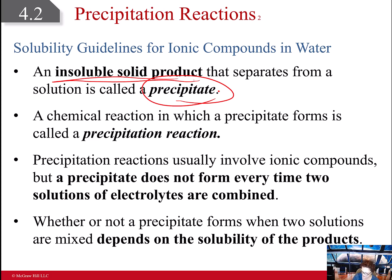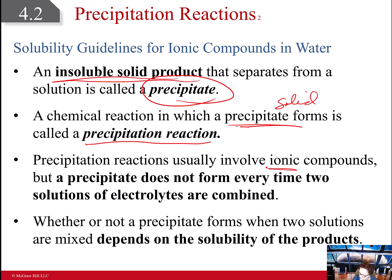The chemical reaction in which a precipitate solid forms is called a precipitation reaction. They usually involve ionic compounds, but a precipitate does not form every time two solutions of electrolytes are combined. Whether or not a precipitate forms depends on the solubility of the products. A lot of times you'll start with reagents that are soluble — both aqueous solutions — but when you mix them and the anion swaps cations, one may form a solid, and then a precipitation reaction has occurred.